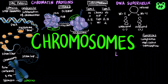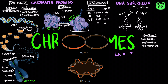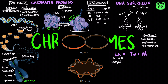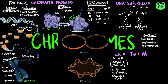DNA supercoiling is defined by linking number, which is a property of double-stranded DNA that does not vary when the DNA is bent or deformed, and can only be changed by topoisomerase. The linking number is the number of times one strand crosses another strand.